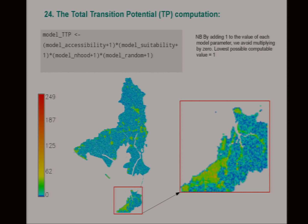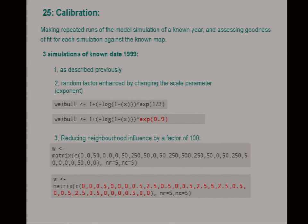Here's our total transition potential. You can see we've got a speckle effect because of our random map. There are a lot of values in cyan which are 1 or very close to 1, but there are some areas outside the urban area which have higher potential.